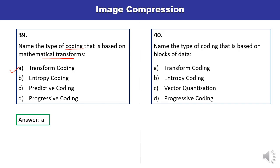Question 40: Name the type of coding that is based on blocks of data. The type of coding based on blocks of data is known as vector quantization. You must remember all the types of coding techniques used in image compression — for which purpose each is used and which type is based on what.